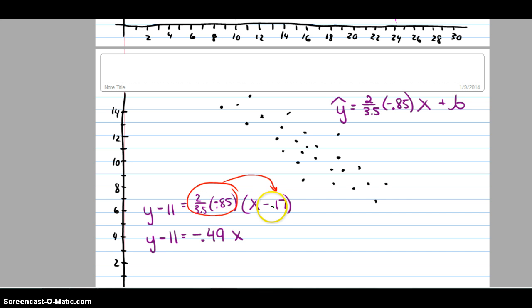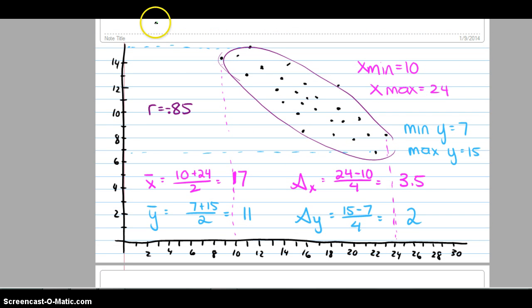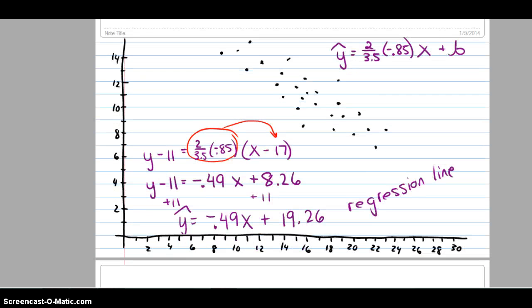And the negative times the negative is going to give me a positive 8.26. So, if I add the 11 to both sides, y is negative 0.49x, plus 19.26. And that's my regression line. I would expect my regression line to have a negative slope. And I would expect it to be crossing somewhere higher than 14 by a fair bit. So, that looks very reasonable to me.